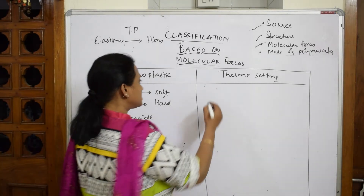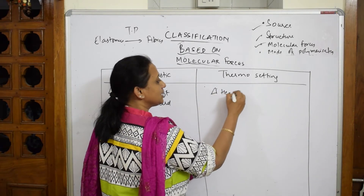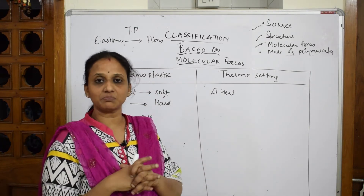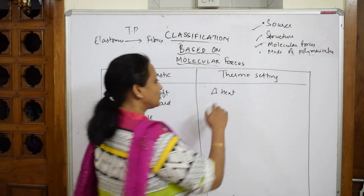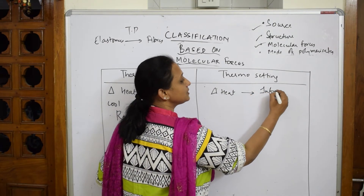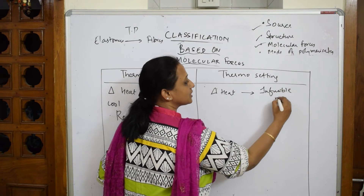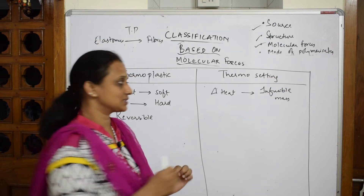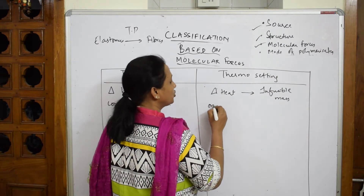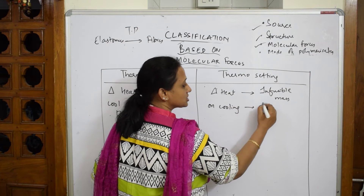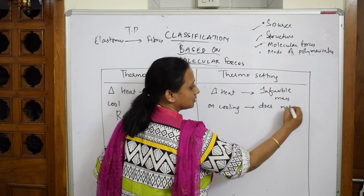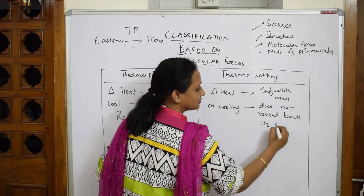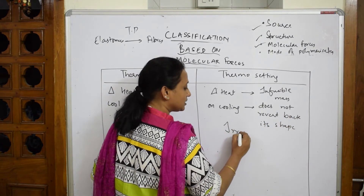Coming to thermosetting polymers: when you heat them, they become an infusible mass — they come together and become hard. You can't revert back on cooling. On heating they form a thick, hard infusible mass, and on cooling, they do not revert back to their original shape.